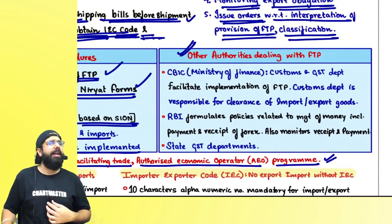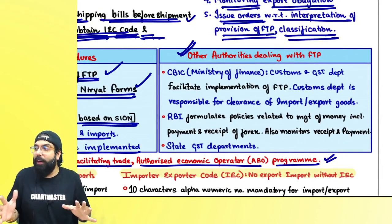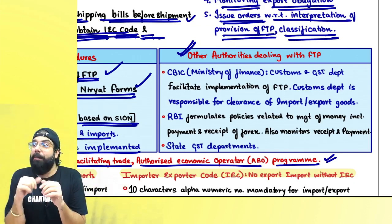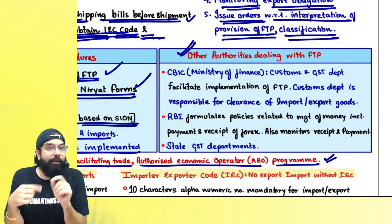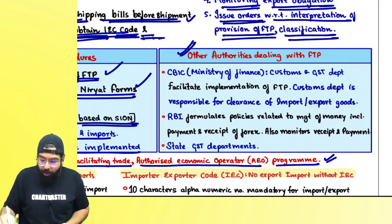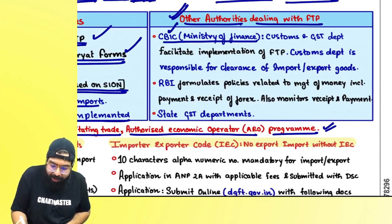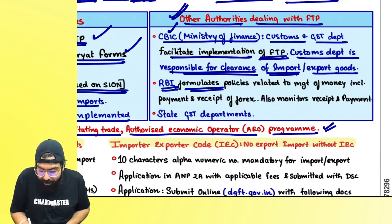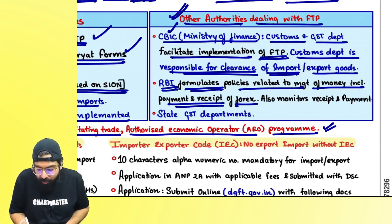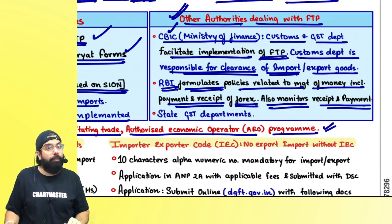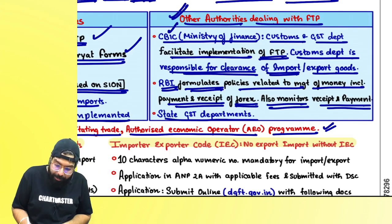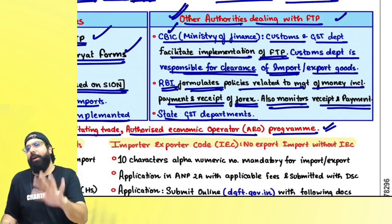DGFT does not have its own enforcement army. They take help of customs — telling customs not to allow certain imports or exports — and also coordinate with RBI to ensure foreign currency is received. Other authorities dealing with FTP: Ministry of Finance and CBIC — customs and GST departments facilitate implementation of FTP. Customs is responsible for clearance of import or export goods. RBI formulates policy relating to management of foreign currency including payment and receipt monitoring.